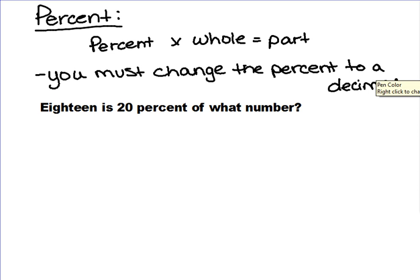We have: 18 is 20% of what number? Keep in mind your key words here — 'is' means equals, 'of' means multiply.